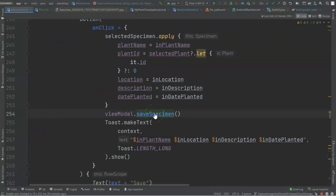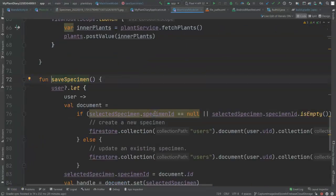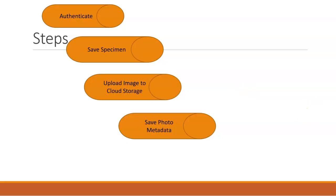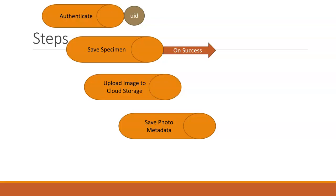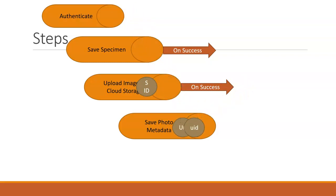Our Save Specimen function calls into the view model, where we are already storing the specimens, the user, and the collection of photos. The balance of our work is going to be in the view model. We need to coordinate all of this in a series of steps: first, we authenticate and get a user ID; then we save our specimen and on success take our specimen ID; then we create our photo record and upload our image to Firebase Cloud Storage. After uploading, we receive a URI representing where that photo lives, and use that to update our metadata for the photo back in Firebase Database so the two are linked.